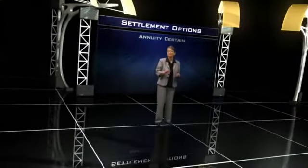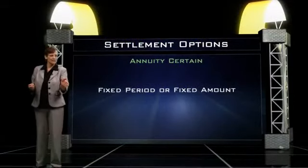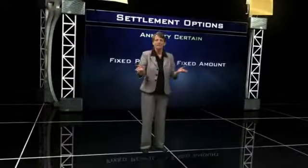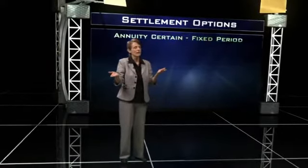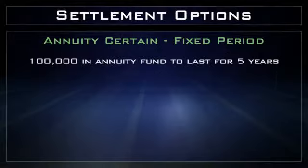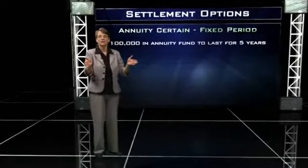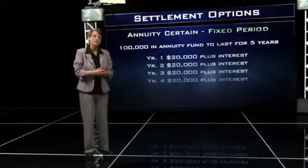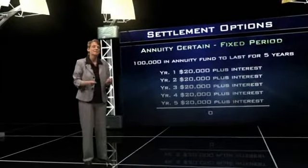The third settlement option is called annuity certain, because the insurance company only pays out for a certain period of time. An annuity certain could be either fixed period or fixed amount. An example of a fixed period annuity certain would be the lottery — a lottery winner receives annuity payments for a certain period of time. In the insurance world, take a $100,000 death benefit: if the beneficiary wants payments over a five-year period, the insurance company divides $100,000 by five years and makes payments of $20,000 per year plus interest. The part representing the death benefit is tax-free, and the part representing interest is taxable.